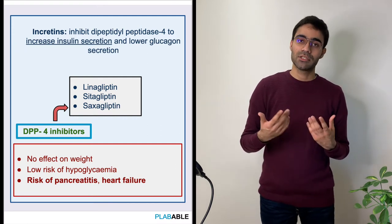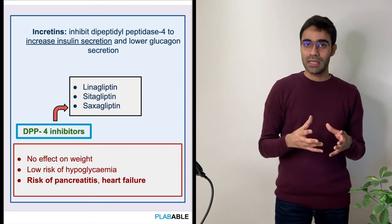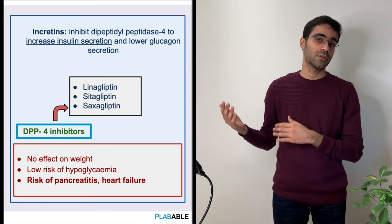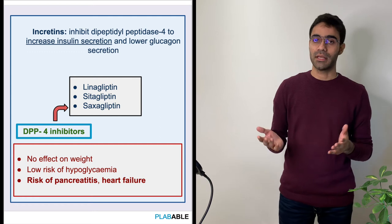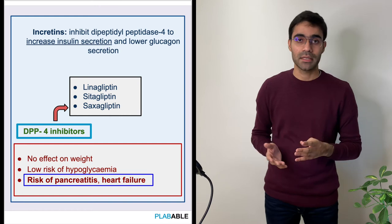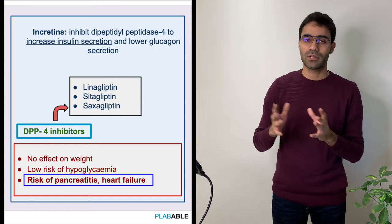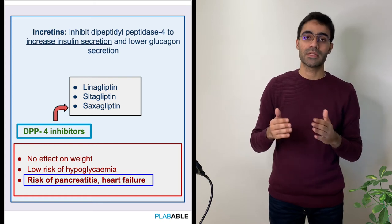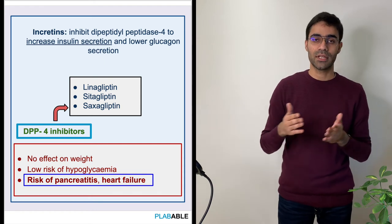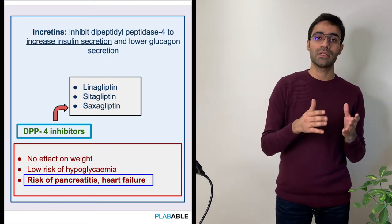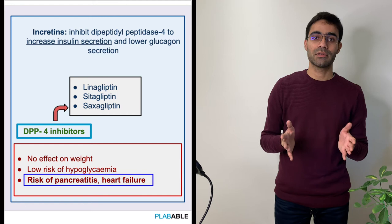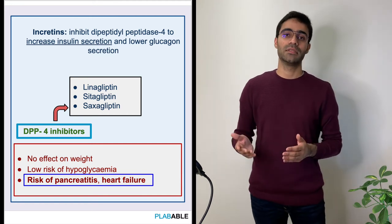The DPP-4 inhibitors also work by increasing the secretion of insulin, so there is an increased risk of hypoglycemia with these agents. However, the risk is lower than with sulfonylureas or meglitinides. These drugs are associated with an increased risk of pancreatitis or heart failure. A helpful mnemonic: dipeptidase is 4, and the pancreas has 4 parts — head, neck, body, and tail — and the heart has 4 chambers. So we should avoid these drugs in patients with a history of heart failure or any pancreatic disorder.